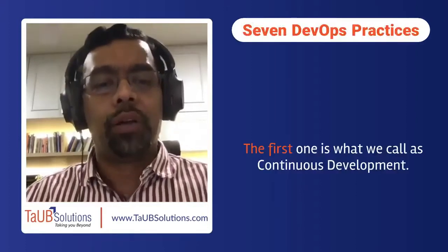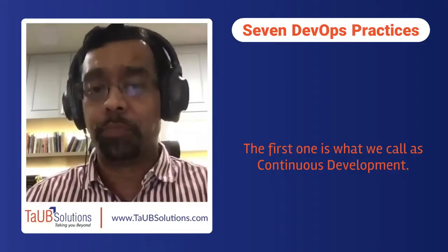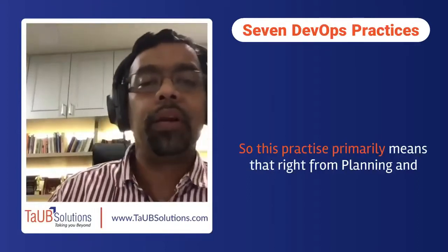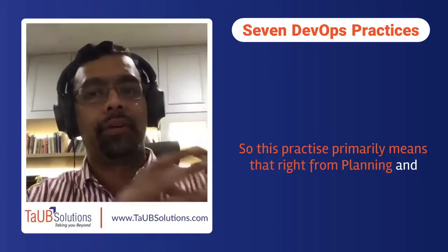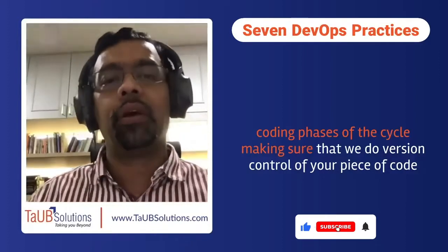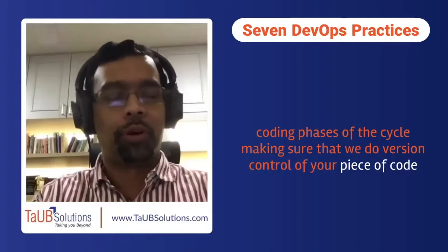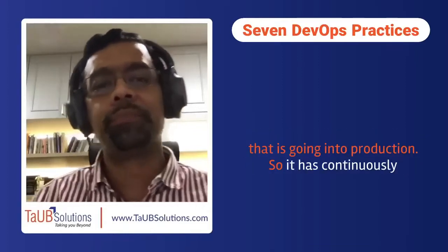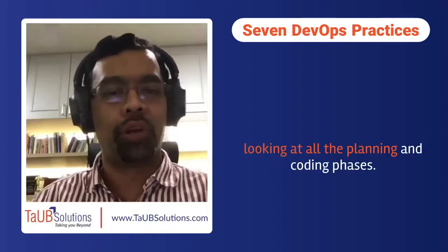The first one is what we call continuous development. This practice primarily means that right from the planning and coding phases of the cycle, we make sure that we do version control of the piece of code that is going into production. It is continuously looking at all the planning and coding phases.